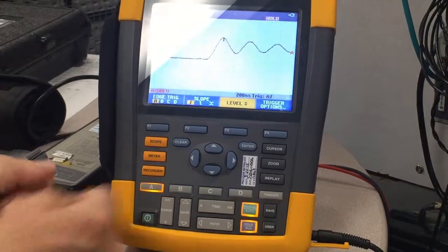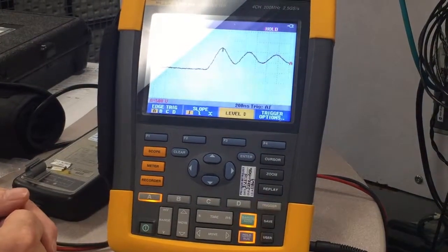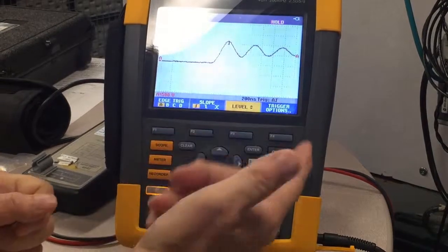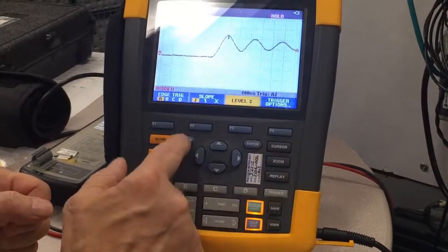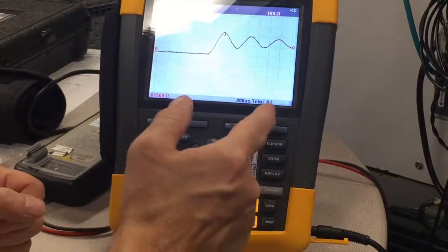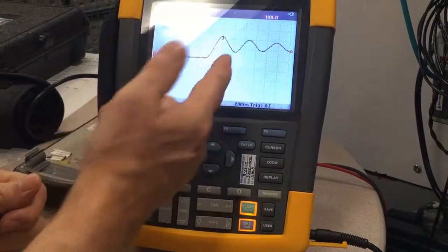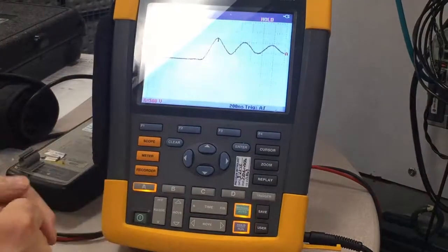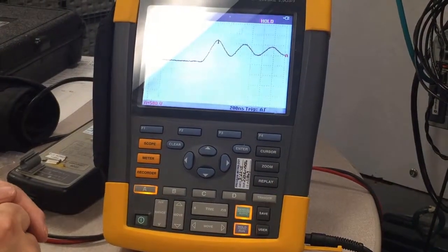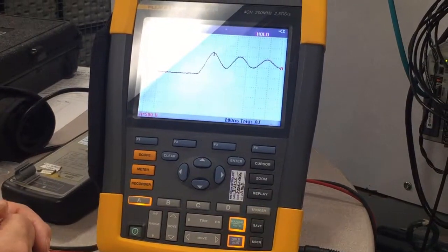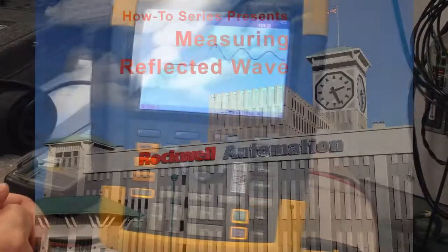We stopped it. It's on hold. And that is one reflective wave voltage with a rise time of approximately 200 nanoseconds and a peak value of just over 1,000 volts. So, there you go. That is how to set up a Fluke scope meter to capture reflective wave voltage. Thank you.